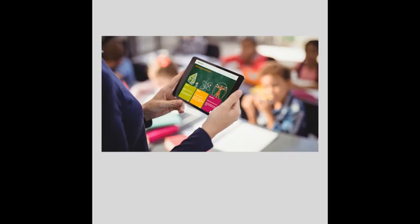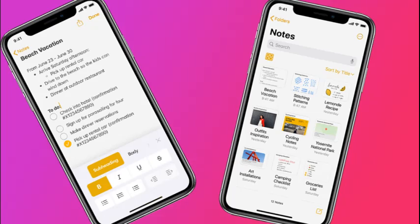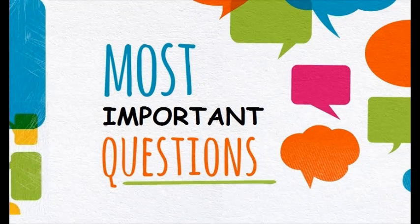Our app consists of topic-wise explanations in blackboard pattern. These explanations are so easy and highly effective to make the concepts clear. Secondly, you will find chapter-wise important question answers of science and social in the application. These important questions are made by experts in such a way that anyone can easily score 90% and above just by learning these questions.